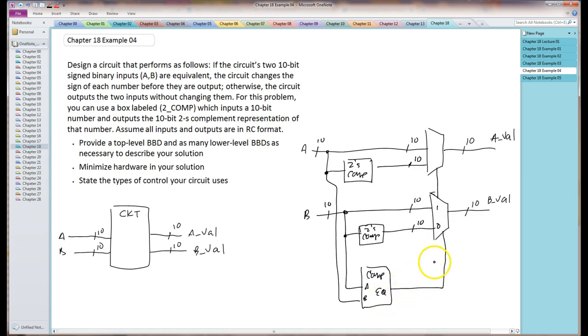So if A and B are equal, it's going to choose B and that's wrong. A and B are equal, it's going to choose B to be fed directly through. That's not what the problem says. So both of these need to be in the other direction. It needs to be zero and one.